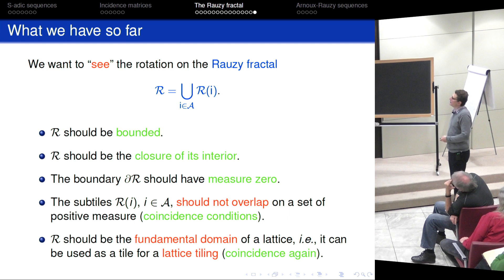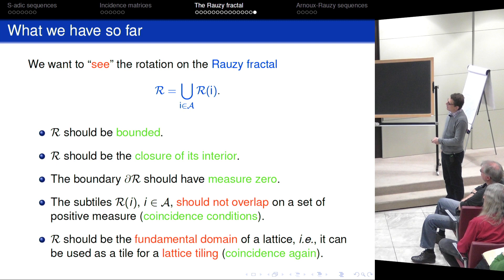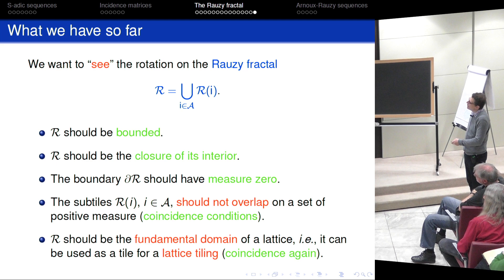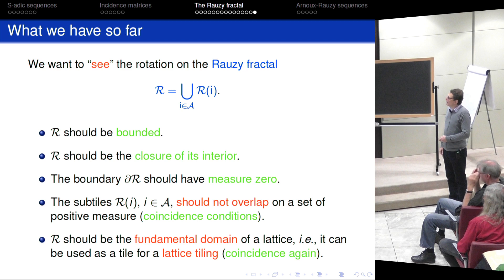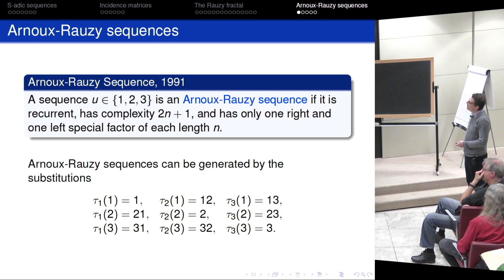So, here is what we have so far. We want to see the rotation. The Pisot condition guarantees it is bounded, the closure of its interior, and the boundary of the Rauzy fractal and also of the subtiles has measure zero. For the fact that the Rauzy fractal is a fundamental domain, we need to check certain so-called coincidence conditions — combinatorial conditions that need to be checked for each class of substitutions you are interested in. We are trying to get rid of this, but so far this is what we have.